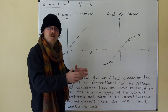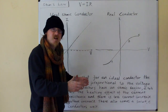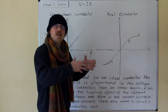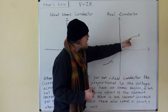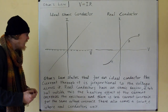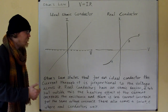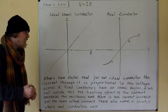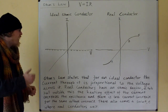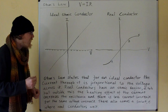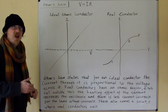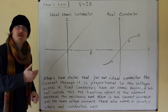As this current heats the conductor up, the resistance of the conductor increases. So outside B, the conductor is heating up, its resistance is increasing, and we're seeing less and less current return for our increase in voltage. Real conductors have an ohmic region A to B, but outside this, the heating effect increases the resistance and there is less current increase for the same voltage increase. There also comes a point C where the current is so large that it causes the conductor to melt.